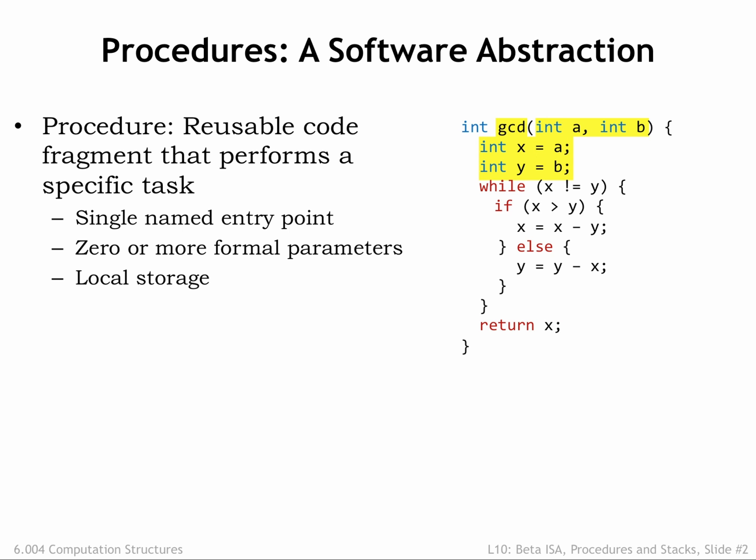Conceptually, the storage for local variables only exists while the procedure is executing. They are allocated when the procedure is invoked and deallocated when the procedure returns. The procedure may return a value that's the result of the procedure's computation. It's legal to have procedures that do not return a value, in which case the procedures would only be executed for their side effects, e.g. changes they make to shared data.